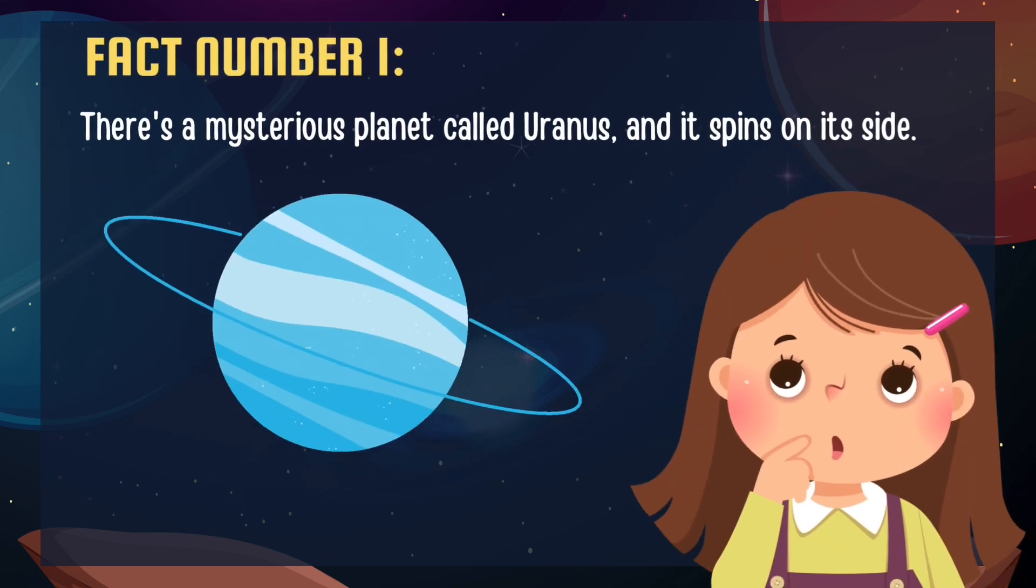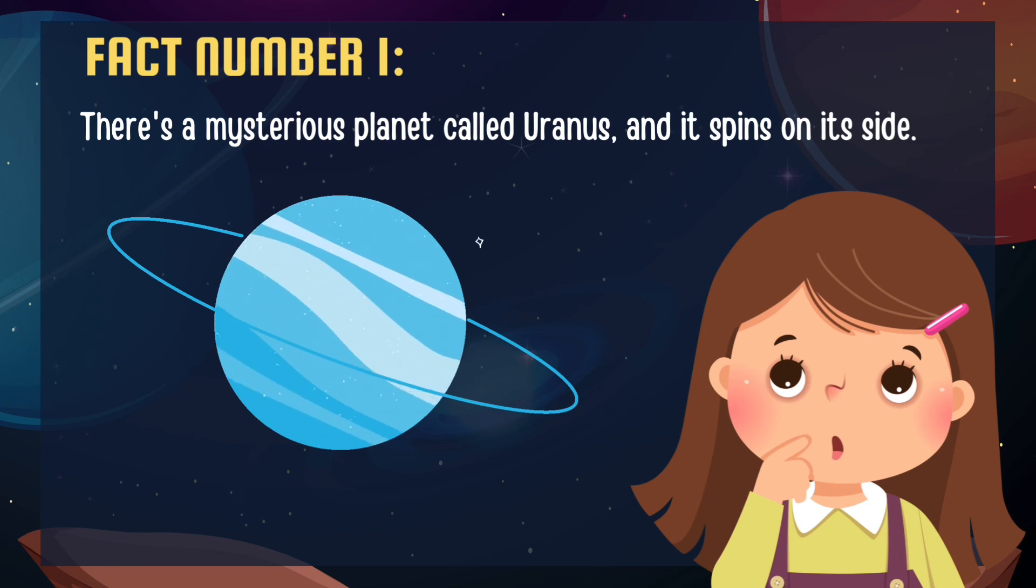And now, our top fun fact of the solar system. There's a mysterious planet called Uranus and it spins on its side. Imagine doing cartwheels around your bedroom.